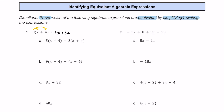Now let's take a look at answer choice A first. Let's see if this is the same expression or not. We can go ahead and just distribute this 5 to both of these terms here. 5 times x is 5x, and 5 times 4 is plus 20.